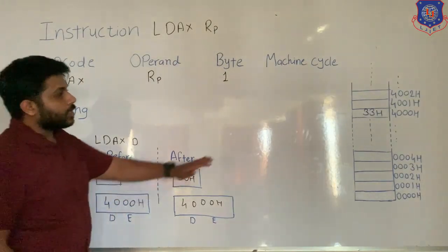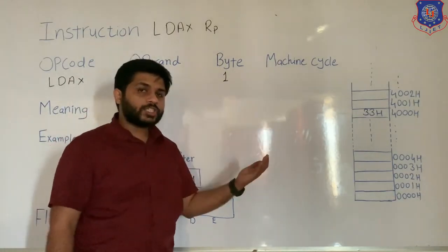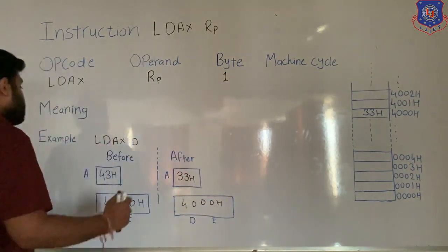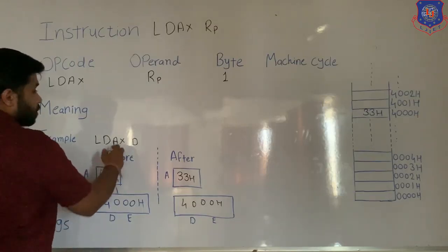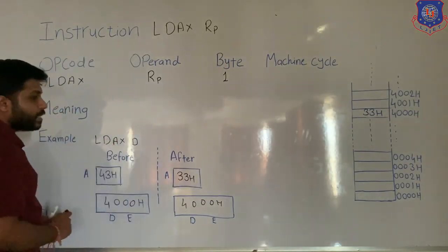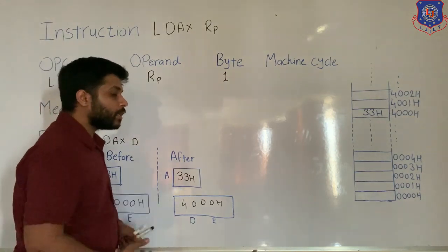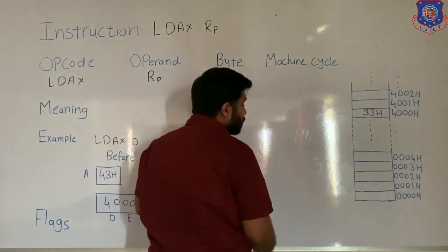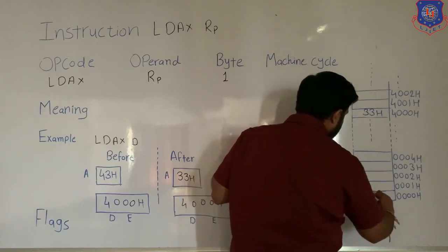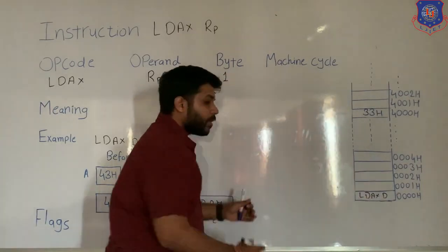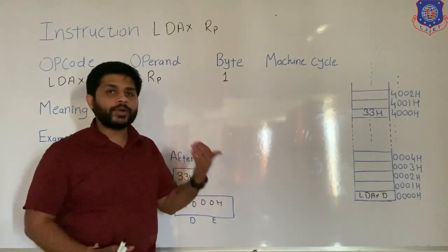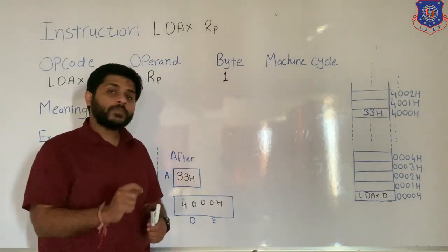Because LDAX is a data transfer instruction, no flags are affected. Now let's see the machine cycle. When you give this instruction, the processor stores it in memory from the starting location. Since this instruction is 1 byte, only one memory location will be occupied, so LDAX D is stored in one location.